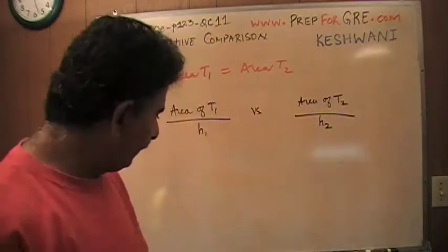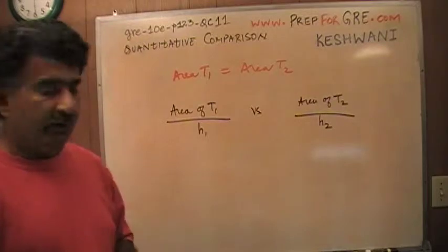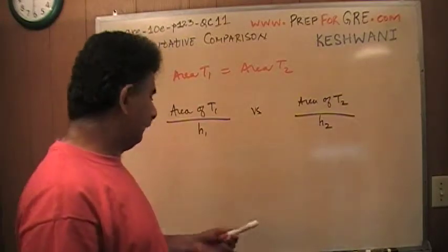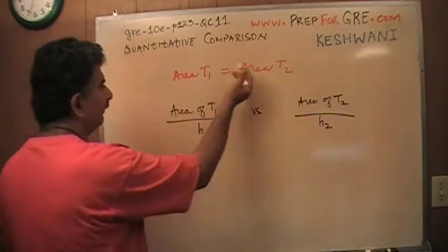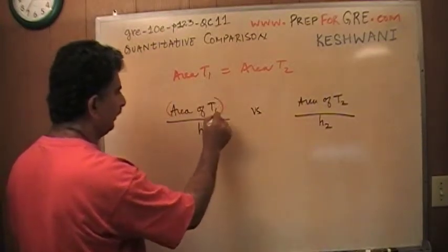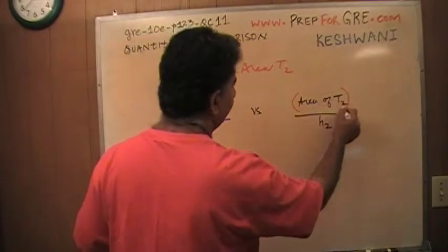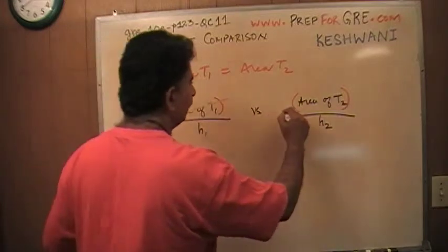Well, I've just been told that the areas of the two triangles are equal. If the areas of the two triangles are equal, then this quantity here, area of T1 is the same as the area of triangle T2, so they play no role in it.